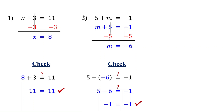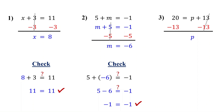Now, what if the variable is on the right side of the equation? That is okay — it doesn't matter which side the variable is on. We solve it exactly the same way. Here, 13 is being added to p. So to isolate p, subtract 13 from both sides. On the right, the 13s cancel out, leaving p by itself. On the left, 20 minus 13 is 7. So the solution is p equals 7.